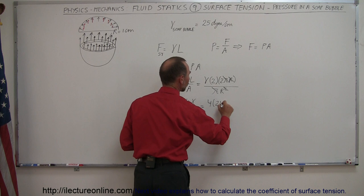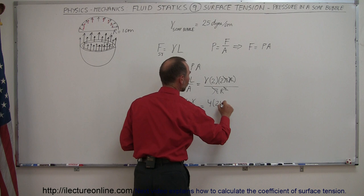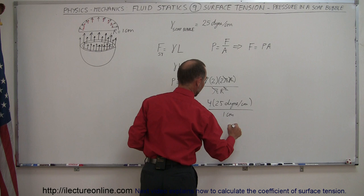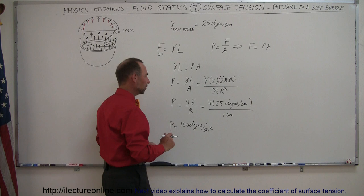which in this case is 4 times 25 dynes per centimeter divided by the radius. In this case, we took a radius of 1 centimeter, and that would therefore be a pressure equal to 100 dynes per centimeter squared.